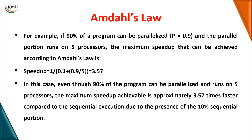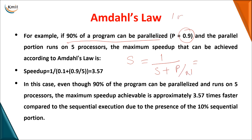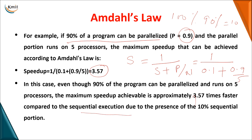For example, if 90 percent of the program can be parallelized, the speedup formula is: speedup = 1 / (serial part + parallel part / number of processes). Here, 10 percent is the serial part (0.1) and 90 percent is the parallel part (0.9). So: 1 / (0.1 + 0.9/9) = 3.57. This means the parallel execution is 3.57 times faster than sequential execution.